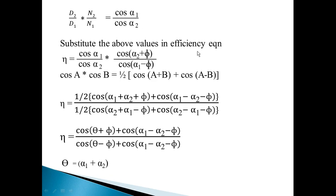The final efficiency equation simplifies to η = cos(α1)·cos(α2 + φ) / [cos(α2)·cos(α1 − φ)], expressed entirely in terms of the spiral angles alpha one and alpha two for the driver and driven gear, and the friction angle phi.